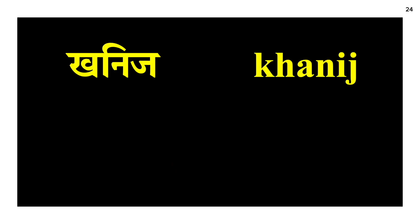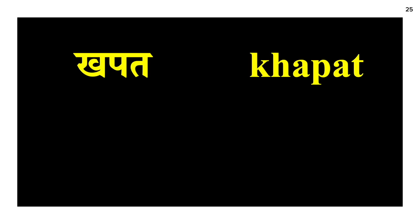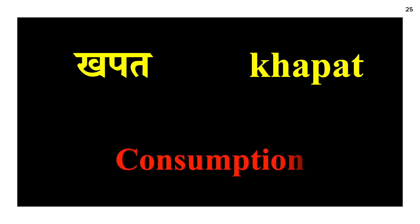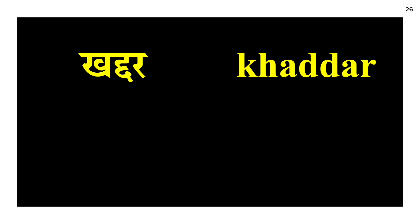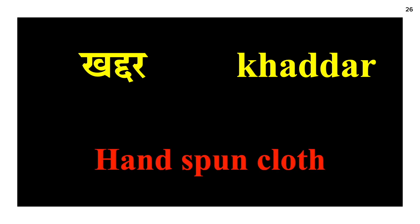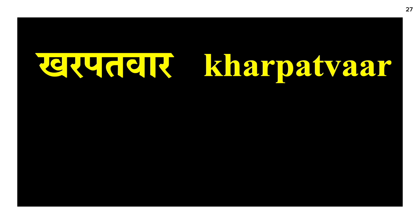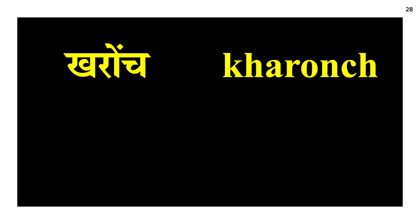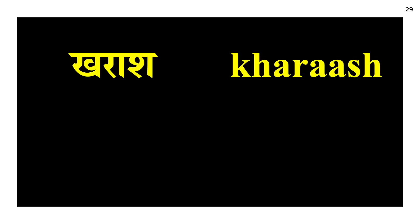Khanij — mineral. Khapat — consumption. Khaddar — handspun cloth; it can be either cotton or silk. Kharpatwar — weeds. Kharonch — a scratch.